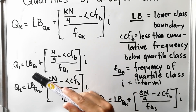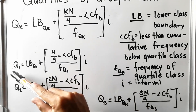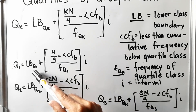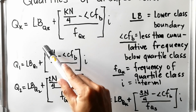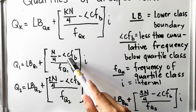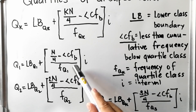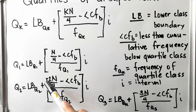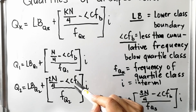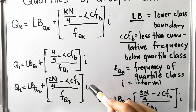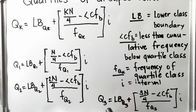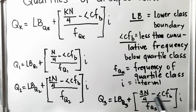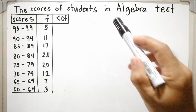Quartiles have 3 score points: Q sub 1, Q sub 2, and Q sub 3. Q sub 1 equals the lower class boundary of the Q1 class plus the quantity of N over 4 minus less than CF below, all over F of Q sub 1 class, times I. For Q sub 2, it is LB of the Q2 class plus the quantity of 2N divided by 4 minus less than CF below, all over frequency of Q2 class, times I. For Q sub 3, it is LB of the Q3 class plus the quantity of 3N divided by 4 minus less than CF below, all over F of Q3 class, times I.